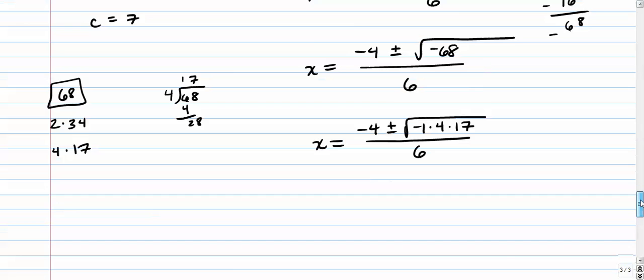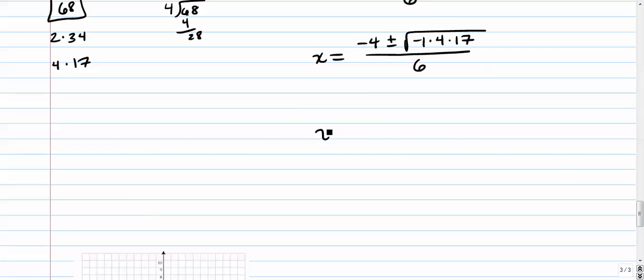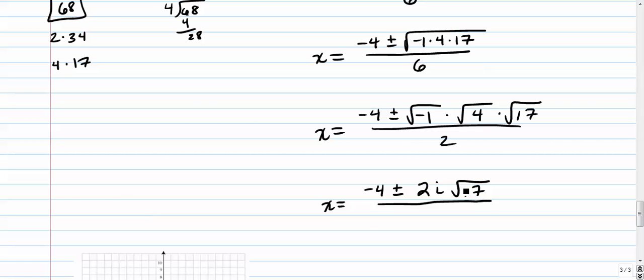So we can break that up into... X equals negative 4 plus or minus. Negative 1 times 4 times 17. All I'm doing there is using some radical rules there. I'm just breaking it up. All right, so we need to remember what the square root of negative 1 equals. That's i. The square root of 4 equals 2. I'm going to write it so the 2 comes first. 2i square root of 17. You can't simplify that. 17 is prime. Over 6.